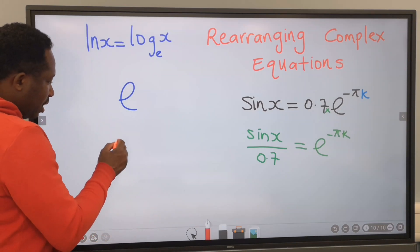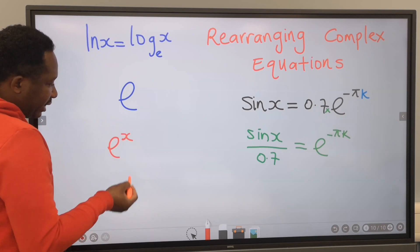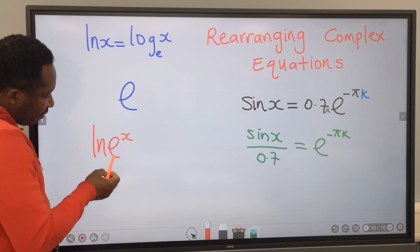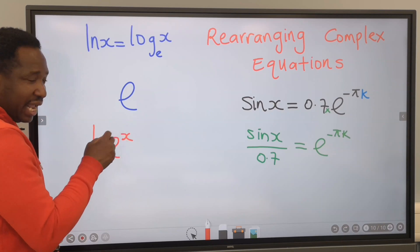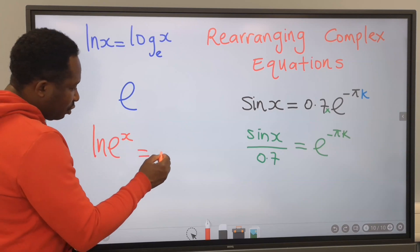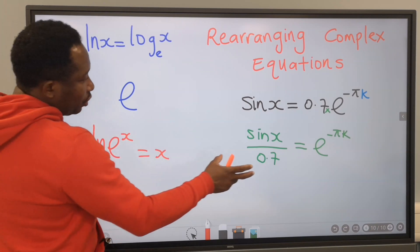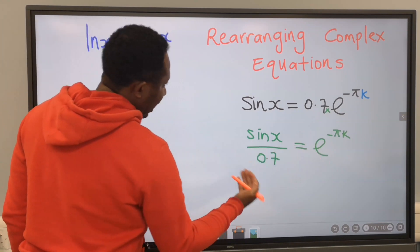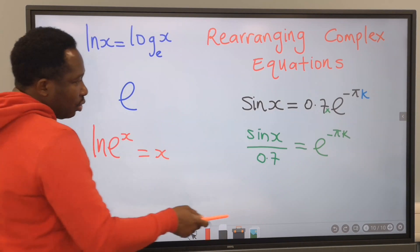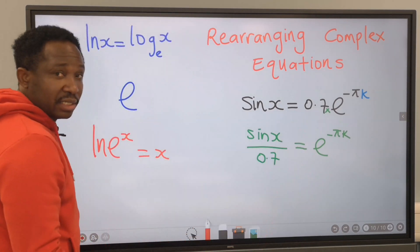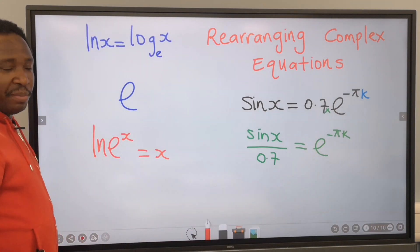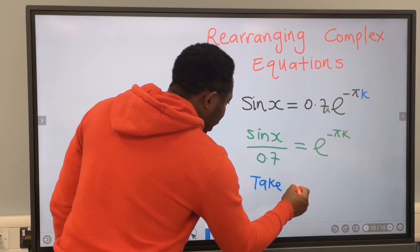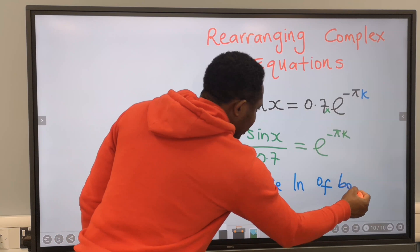For example, if I have e to the x and I introduce the natural log, the natural log very close to the exponential neutralizes the exponential for you to have x. What we're going to do in this equation is take the natural log of both sides so that this natural log will eliminate the exponential and minus pi k will be free. That is, we're going to take the natural log of both sides.